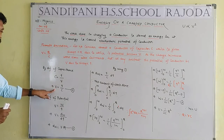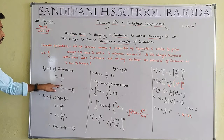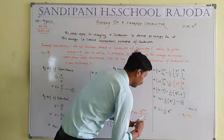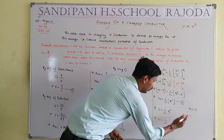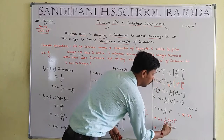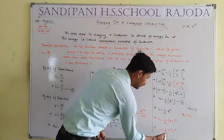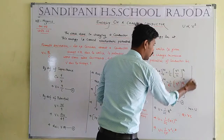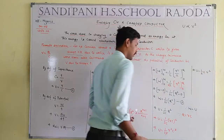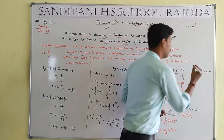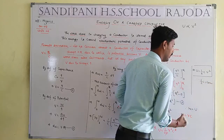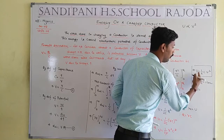By definition of potential, V equals Q by C. By cross multiplication, Q equals VC. Now we put the value of Q equals VC into the expression. So U equals 1 by 2C into (VC) squared equals 1 by 2C into V squared C squared. One C cancels with the 1 by C, giving U equals 1 by 2C times V squared.